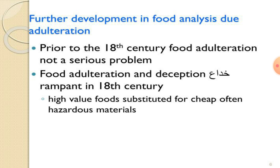There are various types of adulteration: intentional adulteration and incidental adulteration. In intentional adulteration, substances such as sand, marbles, chips, stones, mud, talc, chalk powder, water, minerals, oils, and harmful colors are added. In incidental adulteration, substances added include pesticide residues, droppings of rodents, and larvae in foods.